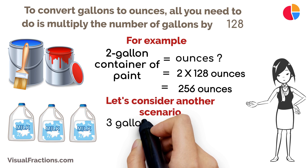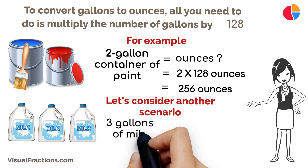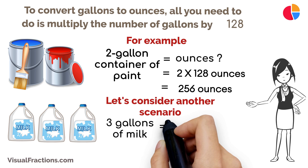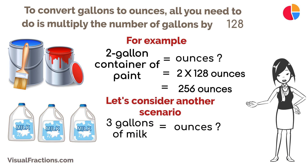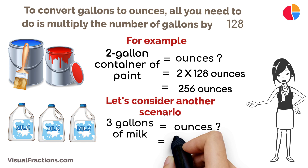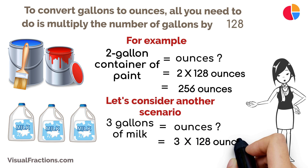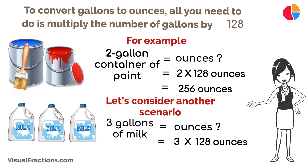Let's consider another scenario. If you're a chef and you need to measure three gallons of milk for a recipe in ounces, converting it is easy — just multiply three gallons by 128 to get 384 ounces.